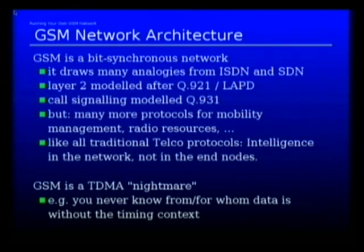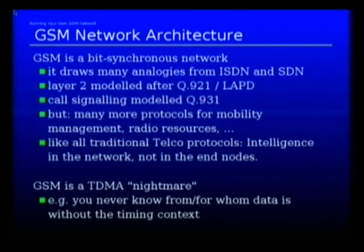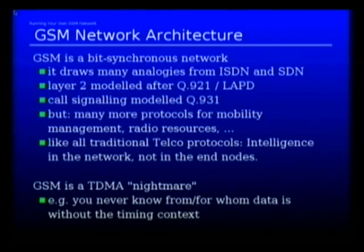Also, like other traditional telecommunications protocols, the intelligence is in the network, not in the end nodes. TCP/IP differentiates itself very much from other networks such as GSM or traditional ISDN, where in TCP/IP the internet paradigm is end-to-end: you have dumb machines in the network that just pass packets, and the intelligence is in the actual end nodes. Whereas in GSM and other telephone protocols, the intelligence is in the network and the end equipment — your handset or GSM modem — is a very dumb device that only executes what the network tells it to do. It's a very master-slave kind of architecture.